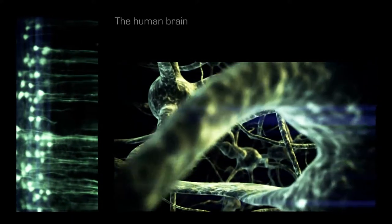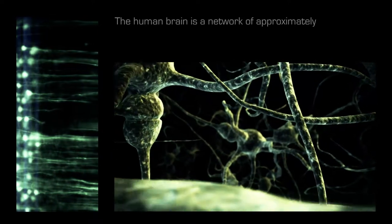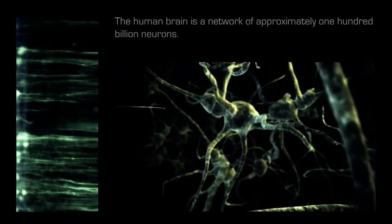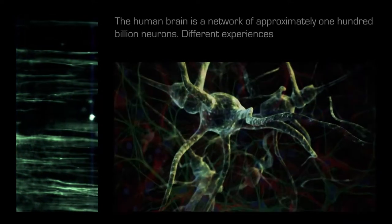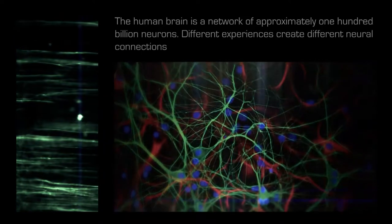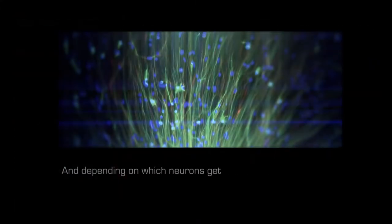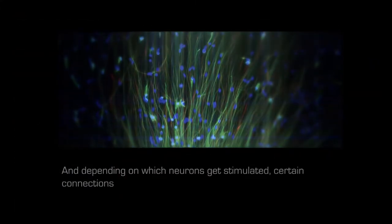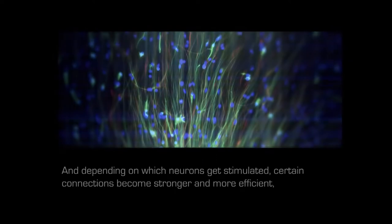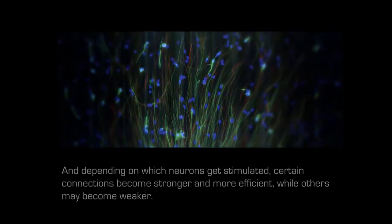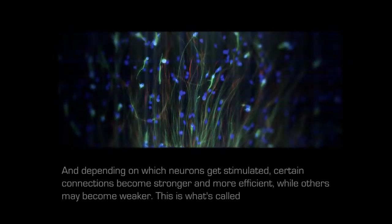The human brain is a network of approximately 100 billion neurons. Different experiences create different neural connections which bring about different emotions. Depending on which neurons get stimulated, certain connections become stronger and more efficient, while others may become weaker. This is what's called neuroplasticity.